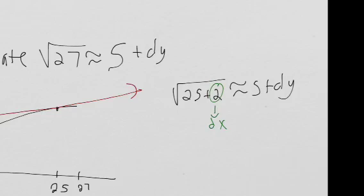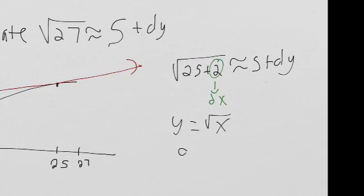the function we're working with is square root x. So dy dx is equal to 1 over 2 root x.